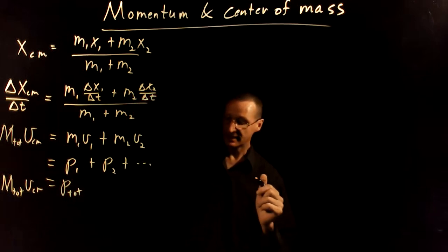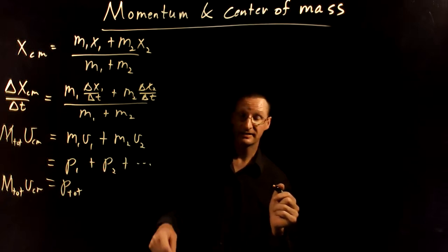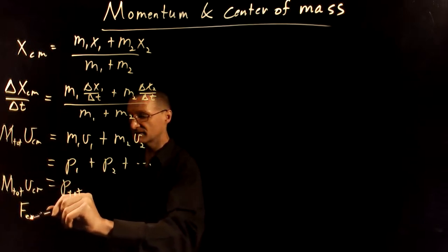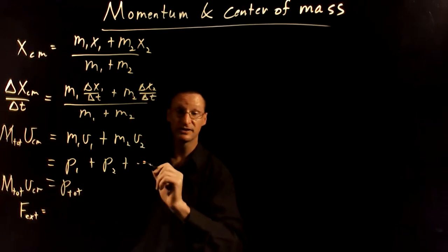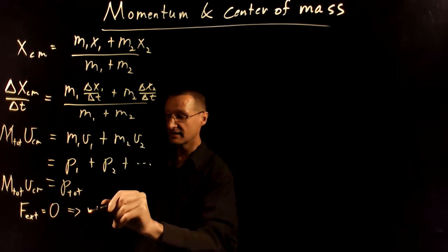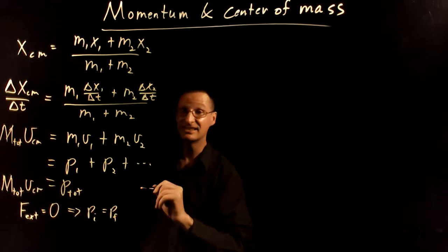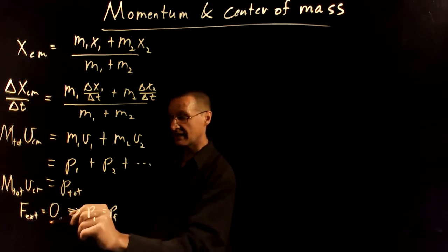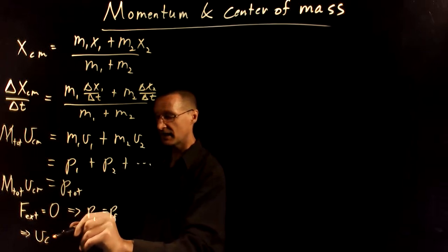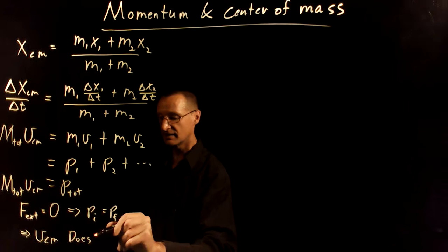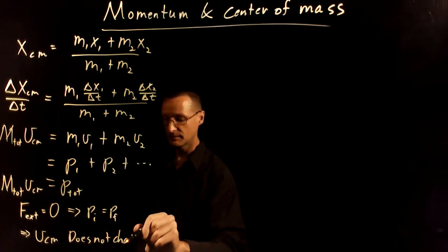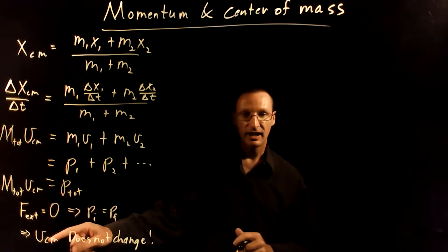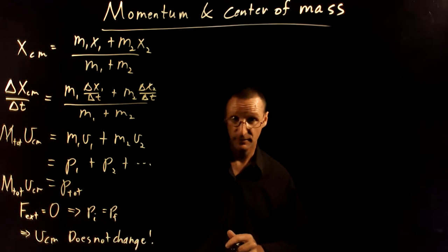So this is telling us how the velocity of the center of mass of the system moves. And if you remember to connect it back with force, if the external forces on a system are zero, this tells us that the momentum is conserved. That is the total momentum of the system. Which means that if this is conserved, that means that the velocity of the center of mass does not change.